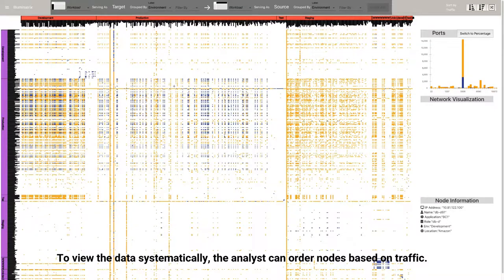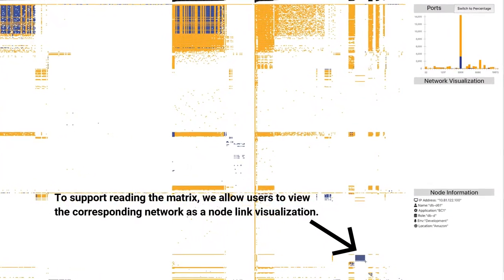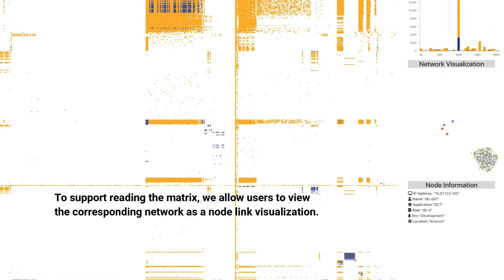To view the data systematically, analysts can order nodes based on traffic. To support reading the matrix, we allow users to view the corresponding network as a node-link visualization.